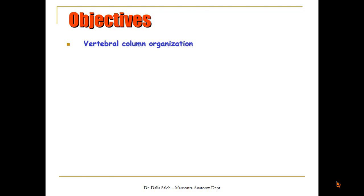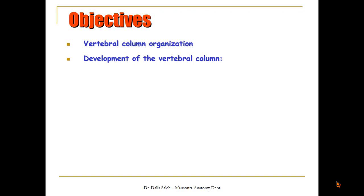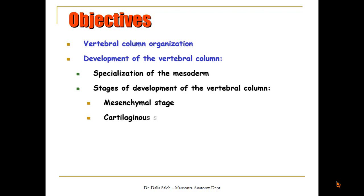The objectives of my presentation today are as follows. First I'm going to remind you about the vertebral column organization. Then we will talk about the development of the vertebral column, which includes the mesenchymal stage, the cartilaginous stage, and the ossification stage. Then we will discuss the fate of the notochord and the costal process at various regions, and finally the anomalies of the vertebral column.